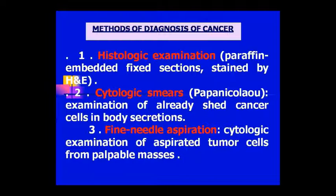Another method is cytological examination, also called Papanicolaou examination. What happens is that cancer cells are shed into body secretions. You take the secretion and examine which cells are coming out. Histologically we had taken whole tissue, but in cytology, cancer cells that shed and fell into body secretion — whether blood or any other body fluid — are taken and observed microscopically. This is called cytological examination.